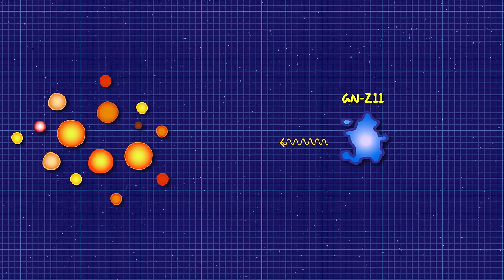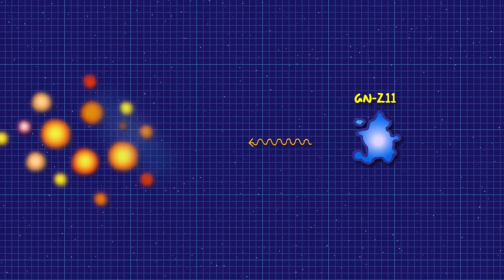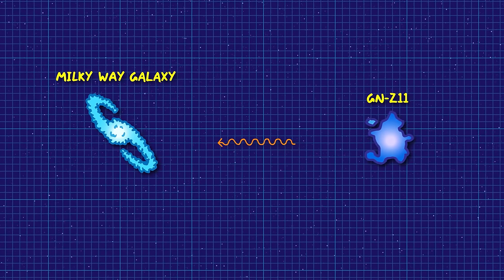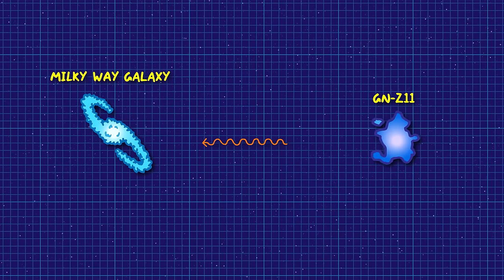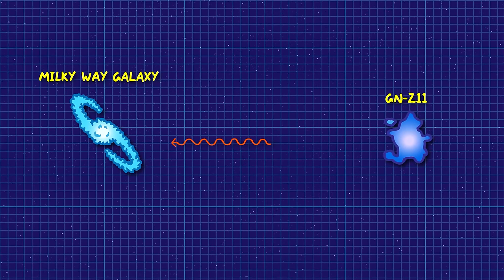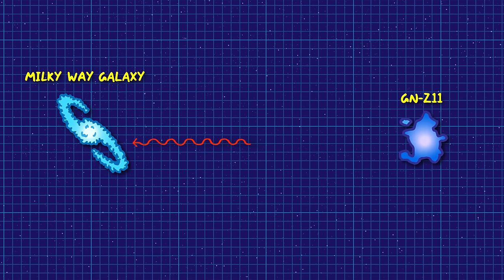This light travelled through space towards us for the next 13.5 billion years. The second generation of stars exploded and their remnants went on to form our galaxy and our sun, which is a third generation star. All this time, the light from GNZ 11 was being stretched as the space it moved through was expanding. This caused its wavelength to get longer and longer, which is called a redshift.